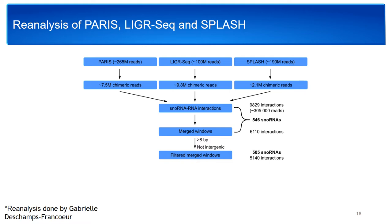Starting from close to 550 million reads from PARIS, LIGR-seq, and FLASH, about 3.5% of those reads were chimeric reads corresponding to RNA-RNA interactions. We then kept only snoRNA-RNA interactions and performed some merging of windows and basic filtering. We ended up with 505 snoRNAs having at least one interaction with another RNA, corresponding to a little over 5,000 interactions.